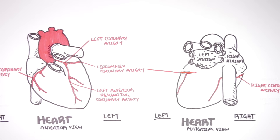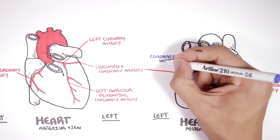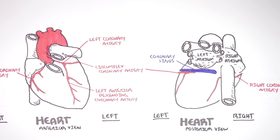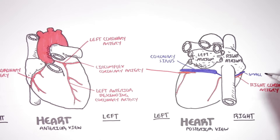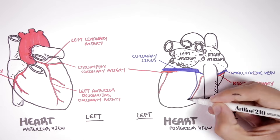Wherever there are arteries, there will always be veins. The veins will leave the cardiac muscle cells and will bring the deoxygenated blood back to the right atrium through the coronary sinus. All the deoxygenated blood from heart muscles will go back through the coronary sinus back to the right atrium. You have the small cardiac vein from the right side of the heart joining with the coronary sinus.